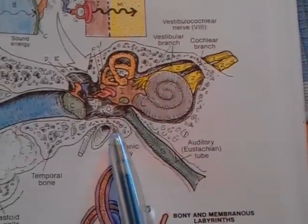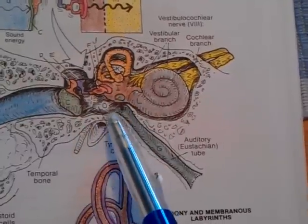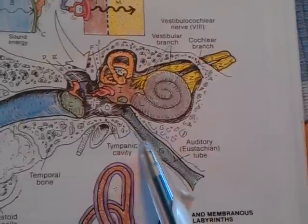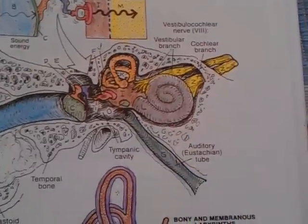The bony part starts in the anterior wall of the tympanic cavity, in the tympanic opening of auditory tube. The cartilaginous part ends on the lateral wall of nasopharynx, in the pharyngeal opening of auditory tube.